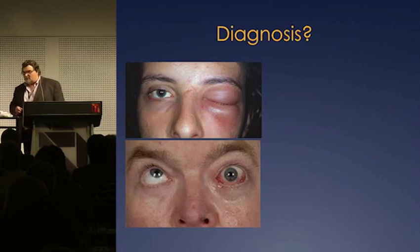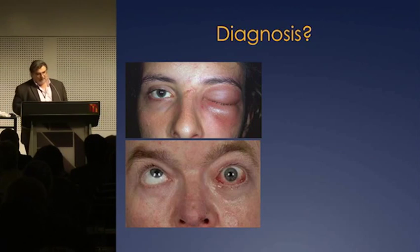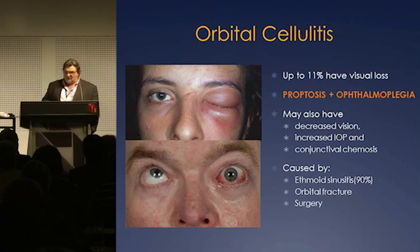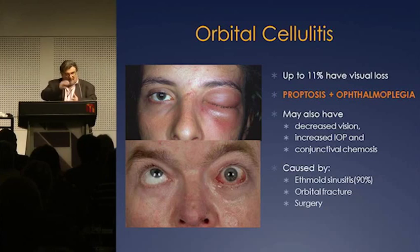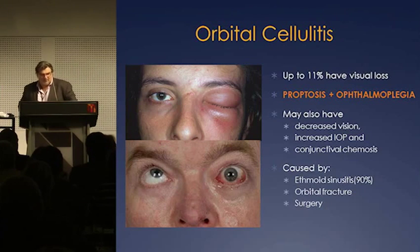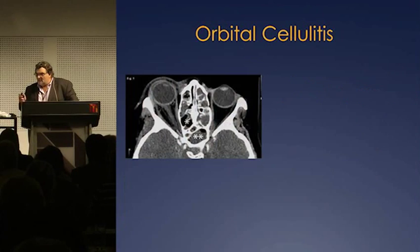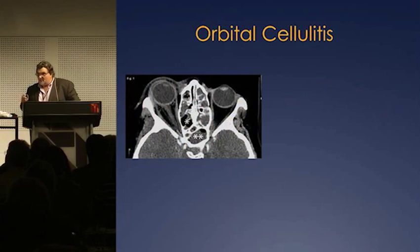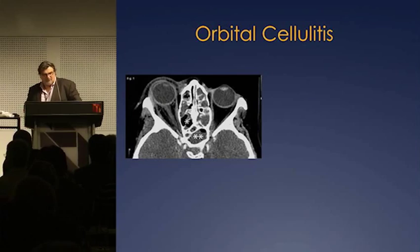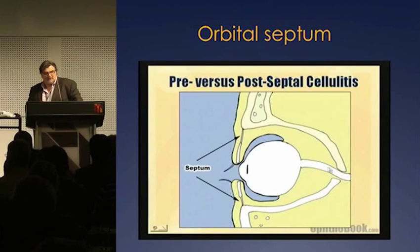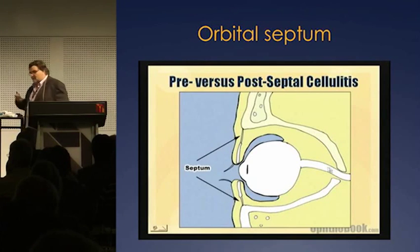Is this one periorbital or orbital? When it's really bad, they'll have proptosis as well as ophthalmoplegia because there's muck and pus sitting around the muscles, not allowing them to move properly. Sinusitis or local infections can cause this, but post-surgery these things happen too — so if they've had recent eye surgery, be very careful. The septum is what differentiates periorbital from orbital cellulitis.